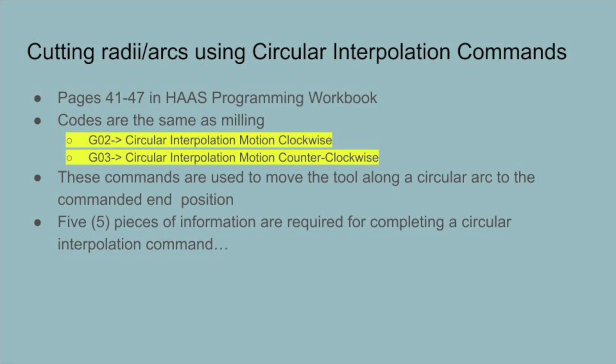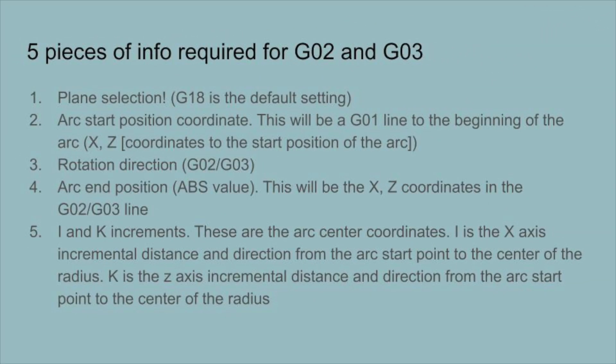There are five pieces of information that we need to use when using arc cutting movements with G02 and G03. First, we must be in the right plane selection. G18 is going to be the default setting on our Haas lathes. We also need to know the arc start position coordinate.